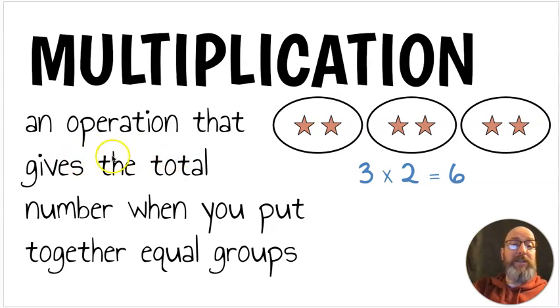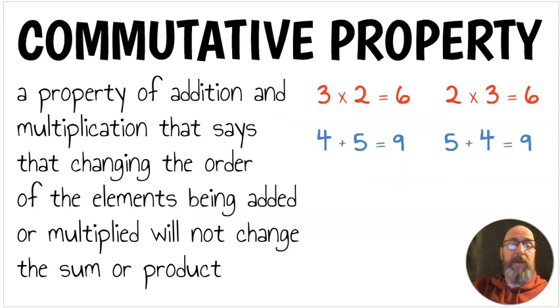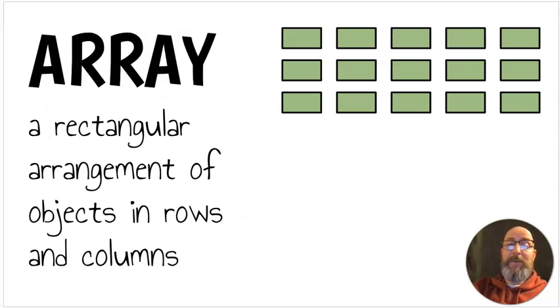Multiplication. It's an operation that gives the total number when you put together equal groups. So here we have three equal groups of two. So three times two equals six. So remember, multiplication is putting together groups. The commutative property. It's a property of addition and multiplication that says changing the order of the elements being added or multiplied will not change the sum or the product. So three times two equals six. Two times three equals six. I change the order. Answer is the same. Same thing with addition. Four plus five equals nine. Five plus four equals nine. I change the order. The answer is the same. Next we have an array. An array is a rectangular arrangement of objects in rows and columns. Here I built an array, three rows of five.